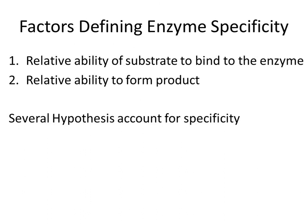The specificity of enzyme action is determined by two separate factors: the relative ability of potential substrates to bind to the enzyme, and once bound, the relative ability to undergo reaction to form products. Only the overall rate of product formation indicates whether the enzyme can utilize a particular potential substrate. There are several hypotheses which account for the specificity of enzymes, like the Lock and Key hypothesis, the Induced Fit hypothesis, or the Strain Stabilization hypothesis, but no single hypothesis is able to account for all features of catalysis and specificity observed in enzyme-catalyzed reactions.